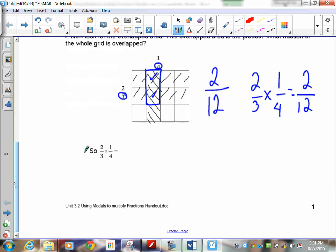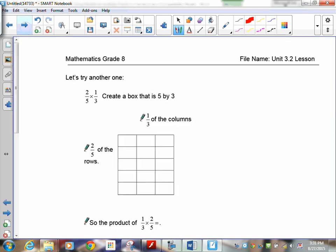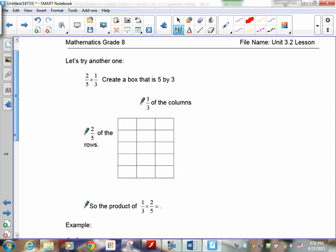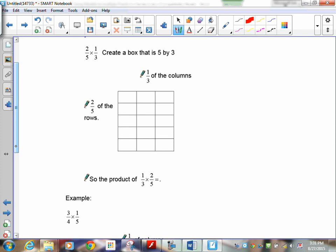Okay, again another one for you: two out of five rows, one out of three columns. So I need five by three. Two out of five rows, so there is one, two. There are my two out of five rows.